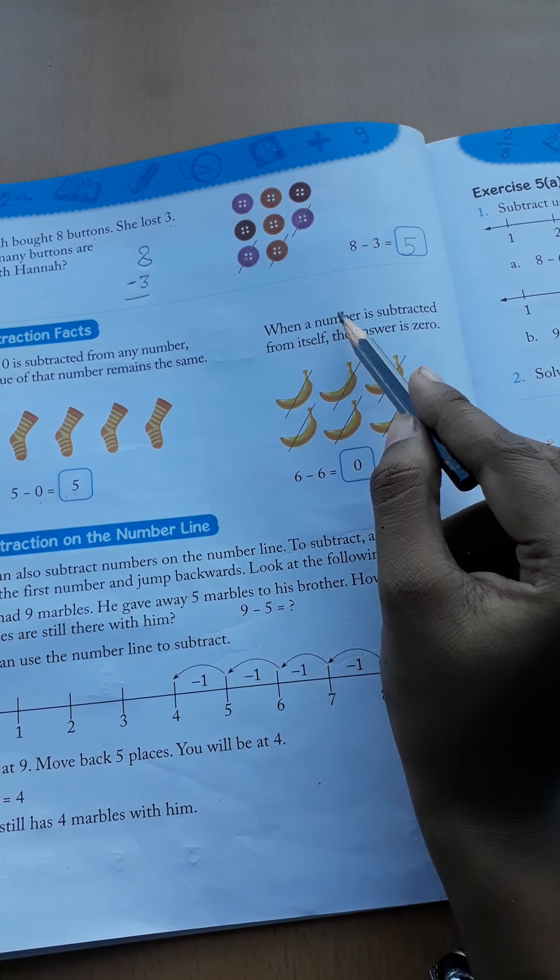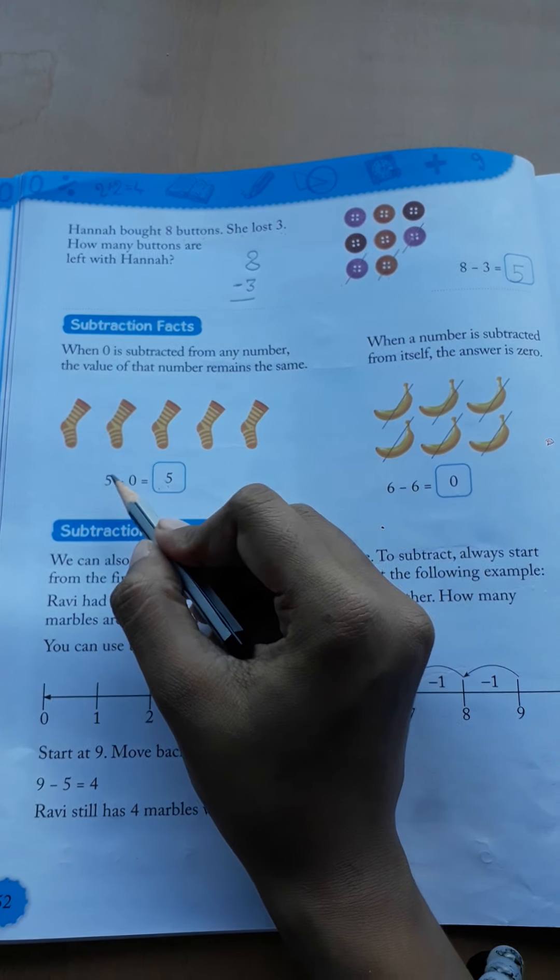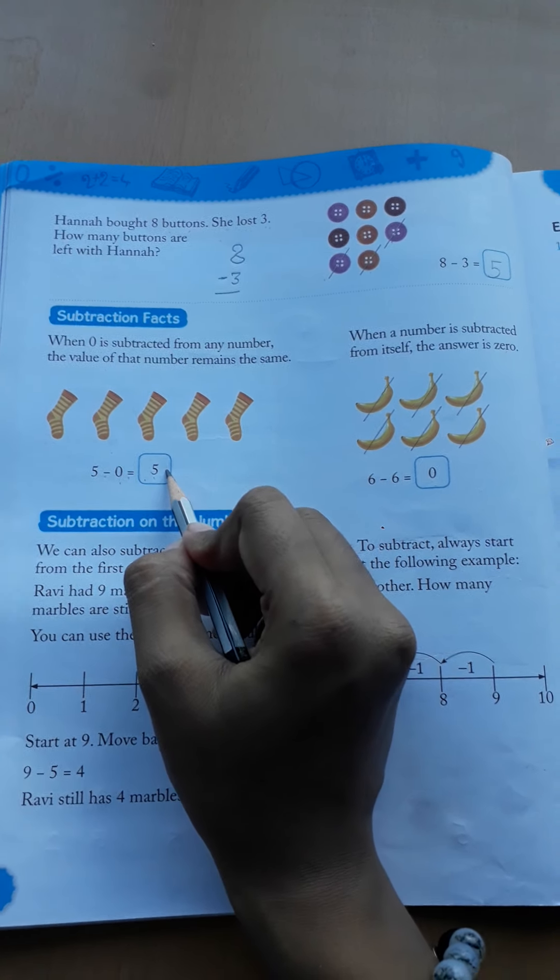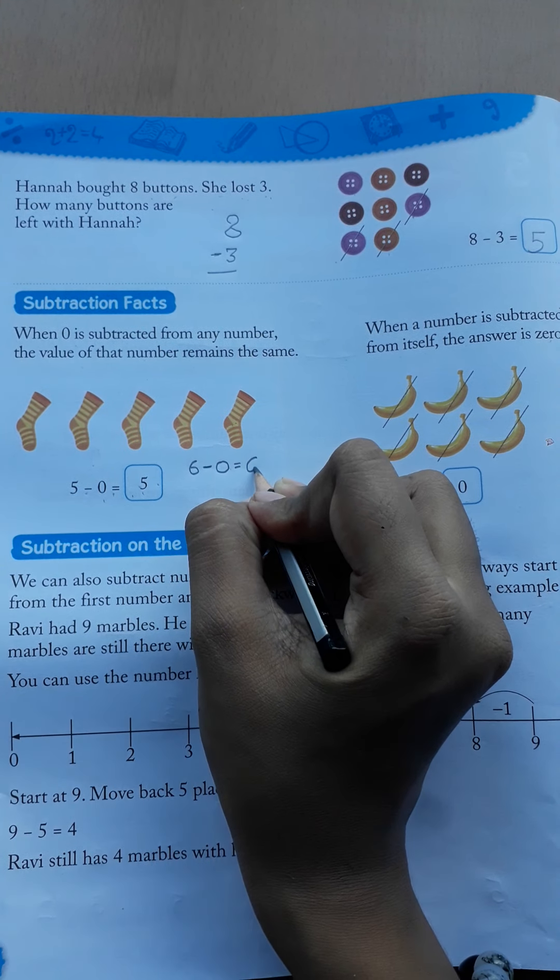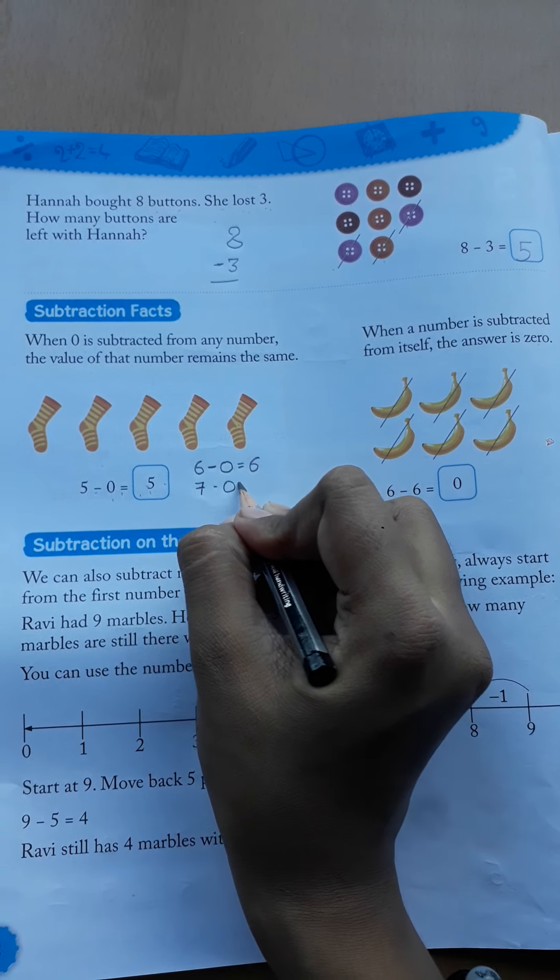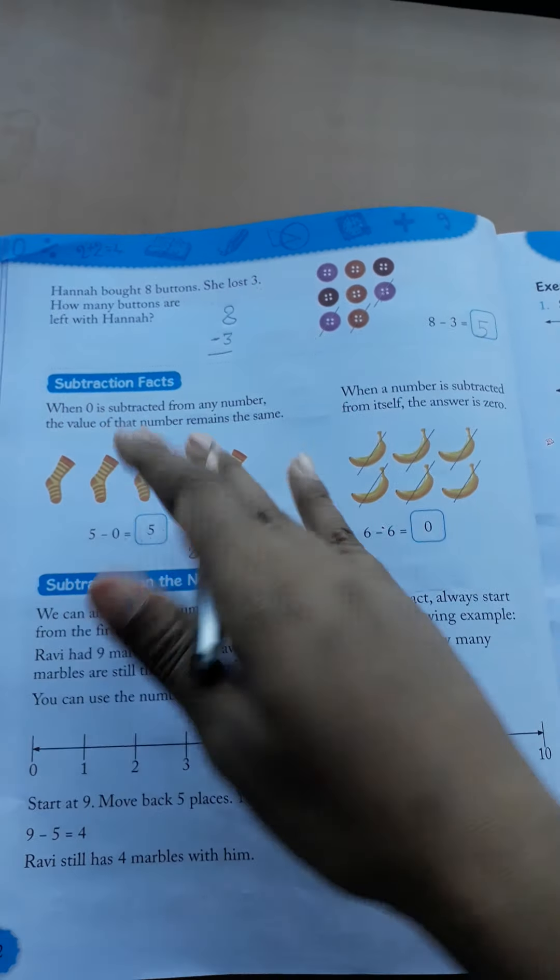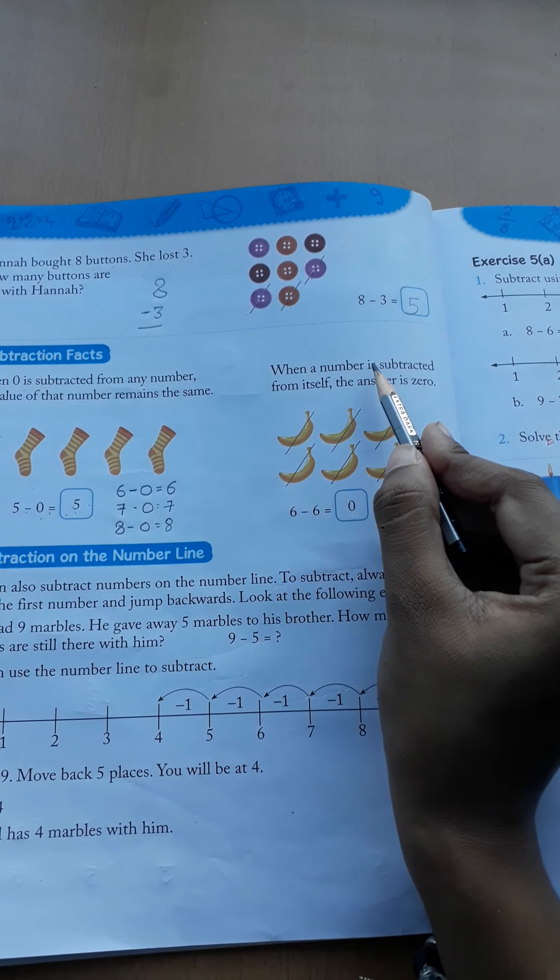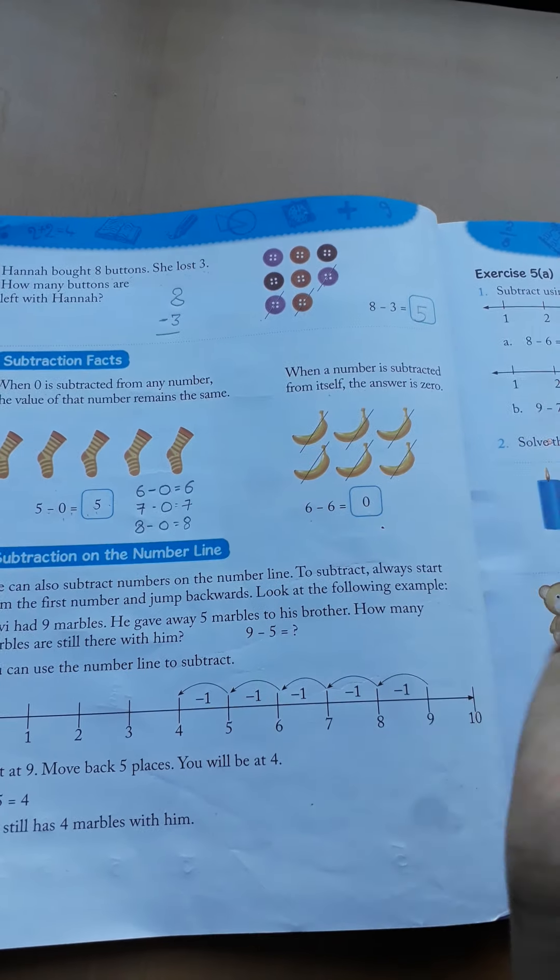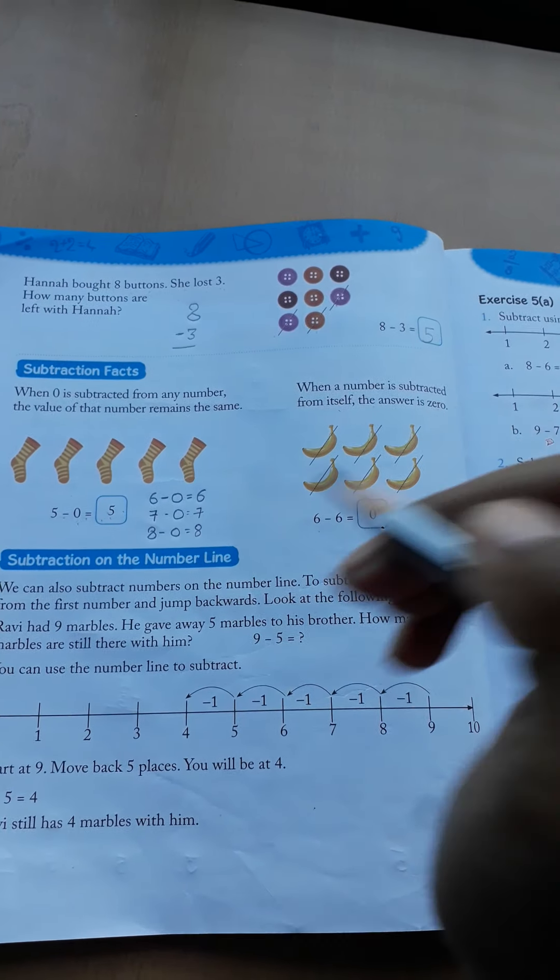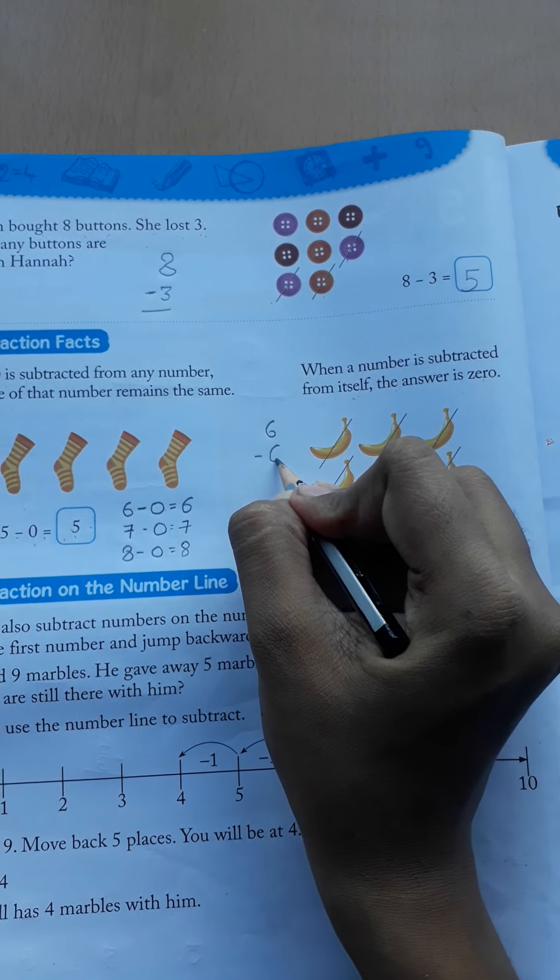When a number is subtracted from itself, the answer is 0. Yeh aap ko samaj me aaya ki jab hum kisi bhi number se 0 ko subtract karenge, toh wahi number aega. For example, if I subtract 6 minus 0, so what will come here? 6. If I minus 7 minus 0, so what will come? 7 here. If we minus 8 minus 0, so what will come? 8 here. Just opposite of this is ki when a number is subtracted from itself, the answer is 0.